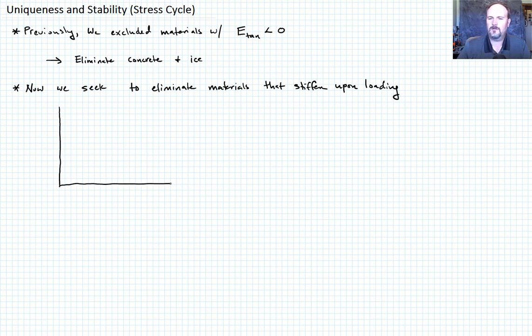So we eliminate materials that stiffen upon loading. What do I mean by that? Let's draw a stress strain curve. So here we go, same as before. This is some epsilon_ij, I'm representing it in one dimension of stress, one dimension of strain just for illustration.